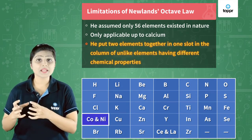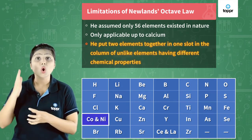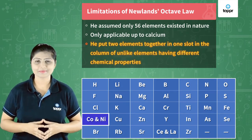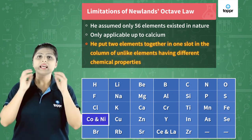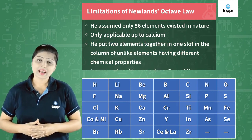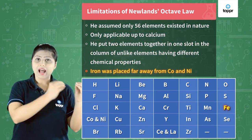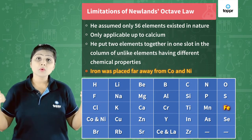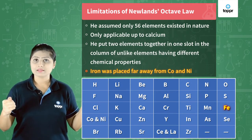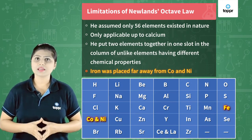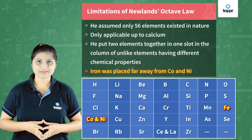Another limitation was that two elements were placed in the same slot in the column of unlike elements — cobalt and nickel. They are metals but they are placed together in the column of halogens. And the last limitation is that iron was placed far away from cobalt and nickel, but all three of them show similar chemical properties.